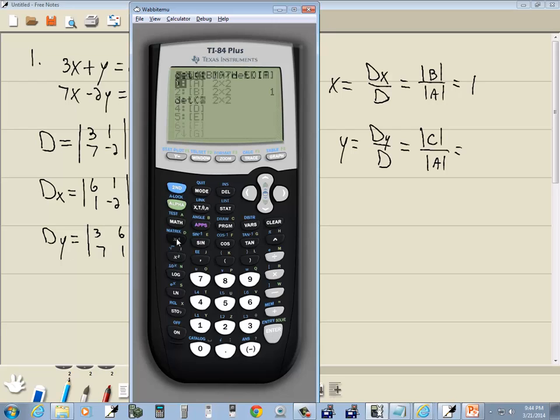Go back in the matrix menu, down arrow to C, enter. Closing parentheses, divided by. Go back into your matrix menu, and right arrow to math, determinant. And back in the matrix menu, enter on A, closing parentheses, enter. And that gives us 3.